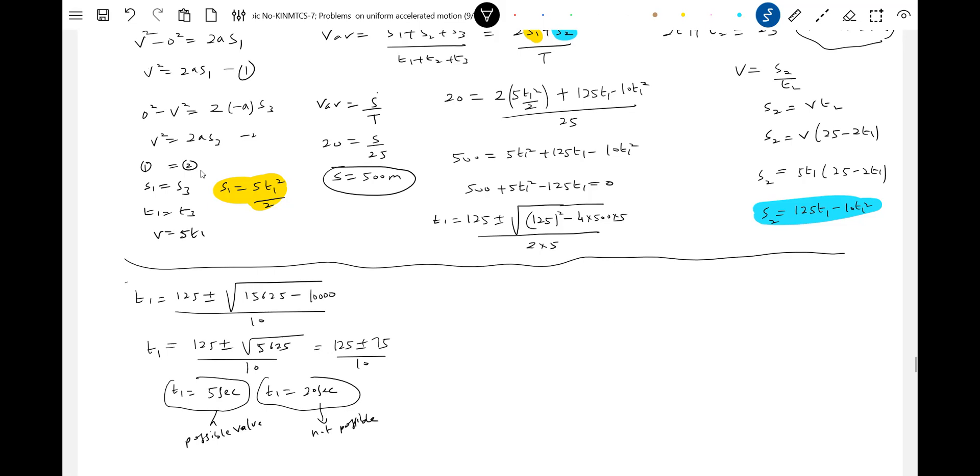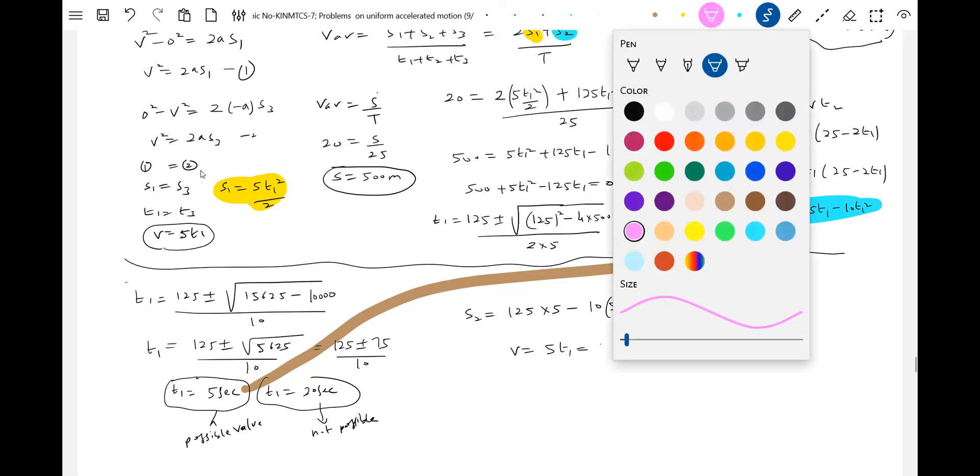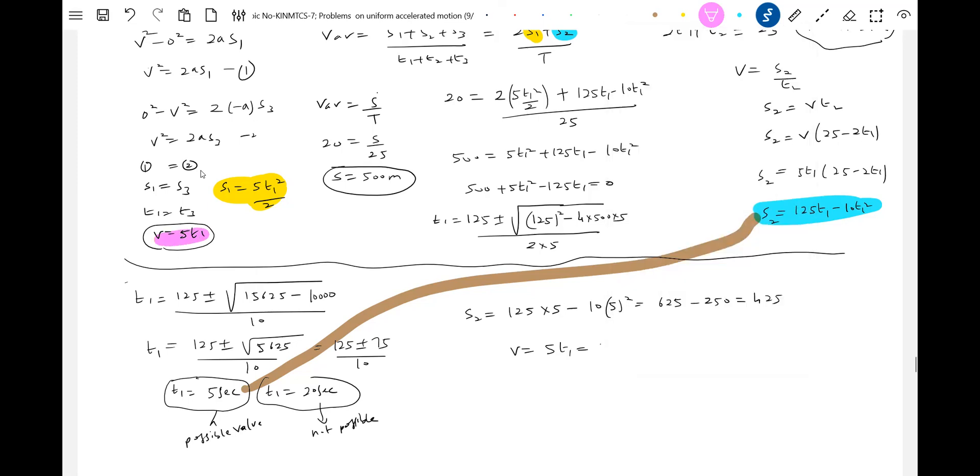Substitute T1 in this equation. I will get S2. S2 equals 125 into 5 minus 10 into 5 squared. 125 into 5 is 625 minus 25 into 10 is 250, which gives 375. Wait - 625 minus 250 is 375. No, 10 times 25 is 250, so it's 425. We know V equals 5T1. Please look at here, this corner.